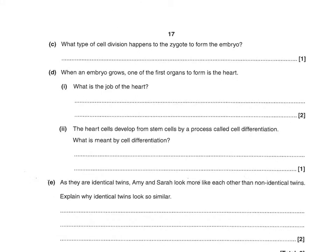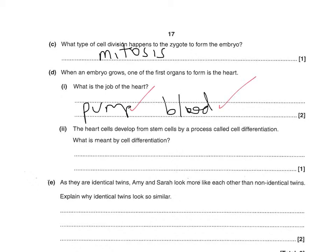The next question asks: what type of cell division happens to the zygote to form the embryo? That is mitosis. And when an embryo grows, one of the first organs to form is the heart. What is the job of the heart? The first mark is for 'pump' and the second mark is for 'blood.' Hopefully that's a fairly straightforward answer — pump, blood, two marks.